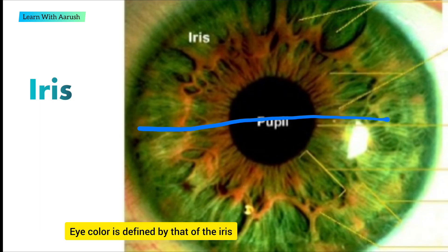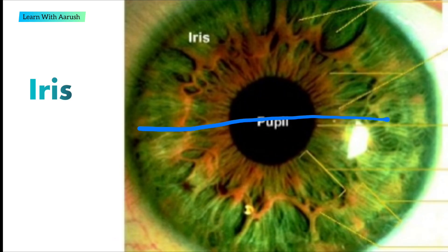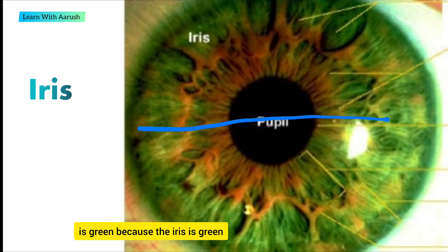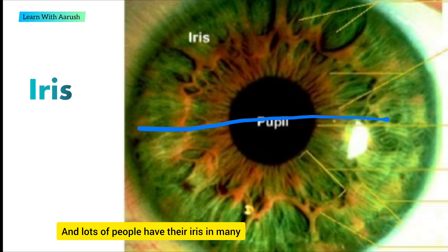Eye color is defined by that of the iris. You can see that this eye is green because the iris is green. Lots of people have their iris in many different colors such as dark brown, blue, etc.